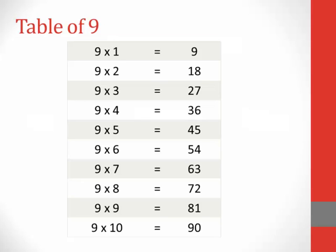Table of 9. 9 1s are 9, 9 2s are 18, 9 3s are 27, 9 4s are 36, 9 5s are 45, 9 6s are 54, 9 7s are 63, 9 8s are 72, 9 9s are 81, 9 10s are 90.